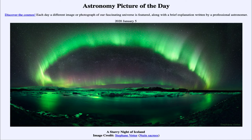Here we can see the aurora. When those charged particles strike the Earth's atmosphere, they cause the atoms to glow — they excite the atoms and cause them to give out distinctive colors associated with their specific atomic type. In this case, we're seeing the emission from oxygen atoms. When oxygen atoms are excited, they will give off a green glow.